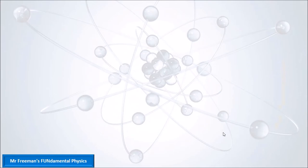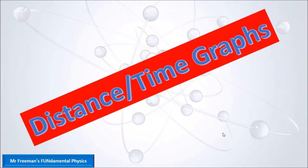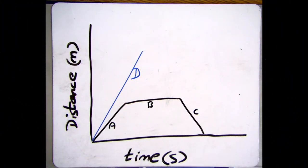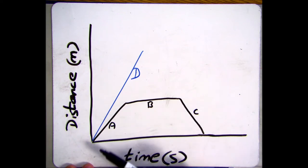Hello and welcome to this video on distance-time graphs presented by Mr. Freeman's Fundamental Physics. A distance-time graph is a graph that shows how far an object has moved and the time that this travel took. Here we can see two simple distance-time graphs: one that tracks A, B, C and one that tracks D.